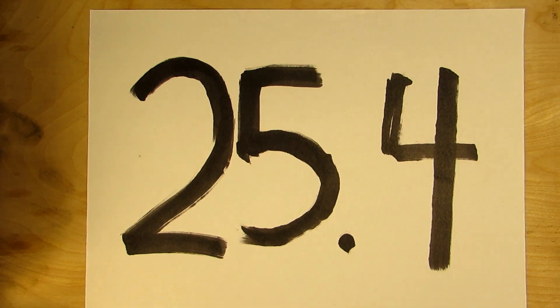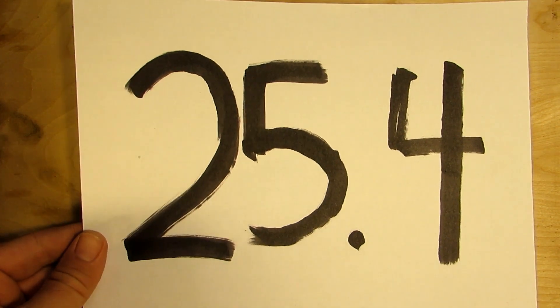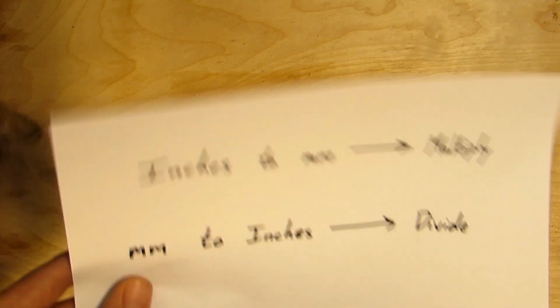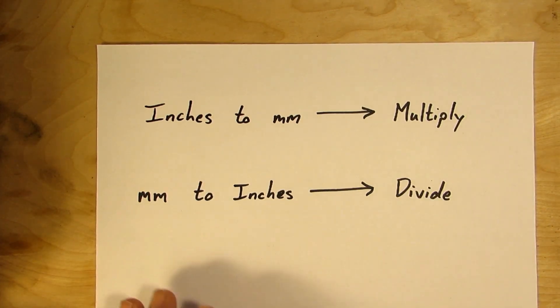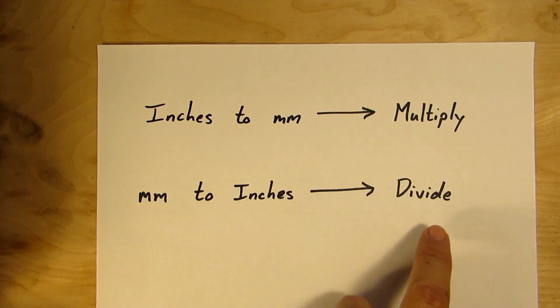Whichever direction you're going, you're going to want to take 25.4 and either multiply it or divide. So if you're going from inches to millimeters you're going to multiply, and if you're going from millimeters to inches you're going to divide.